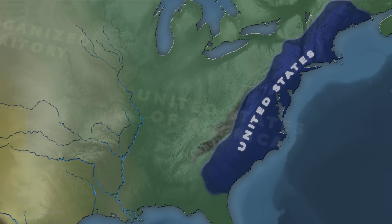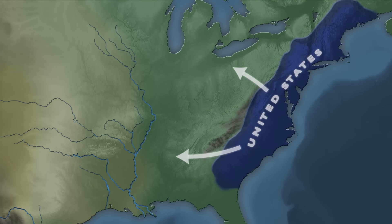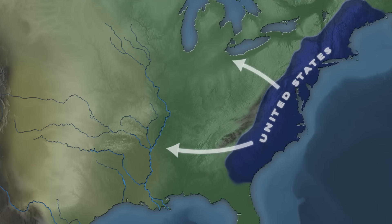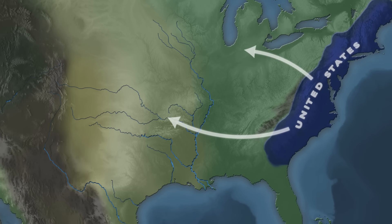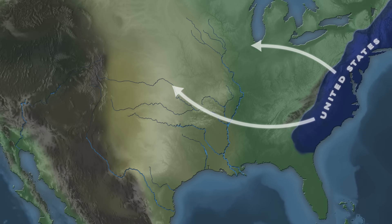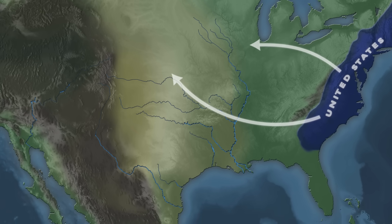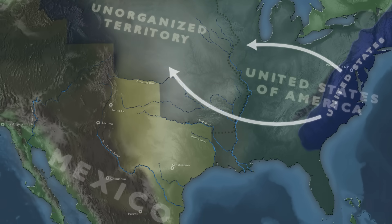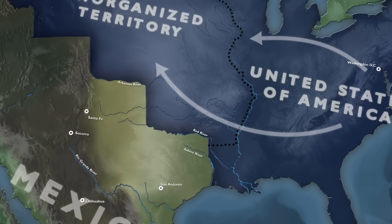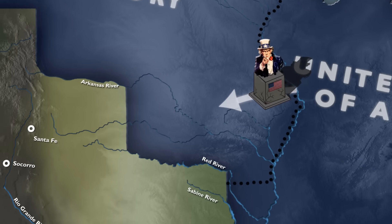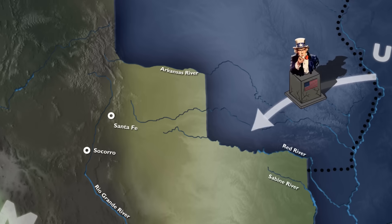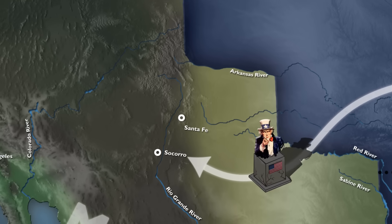The United States was in expansion, and the country was much bigger than it was when it became independent. The United States expanded deeper into Native American territories and purchased the huge Louisiana territory from the French. Although the country was expanding, there was an opportunity for more.